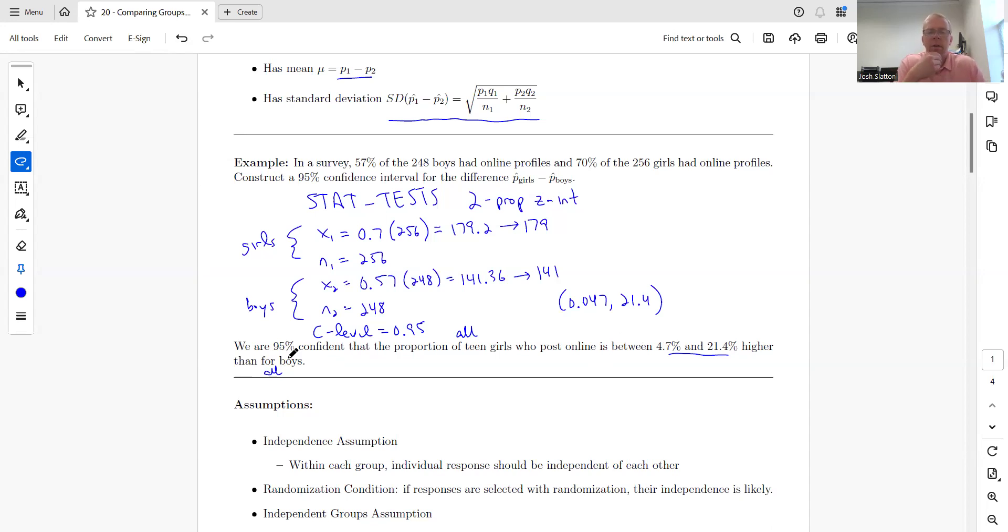One thing to consider, if you do this and you get the wrong answer, you might have switched—you might have the boys up here and the girls down here, in which case you just get the negatives of the answers. Then you just need to switch, which you will need to switch the order.